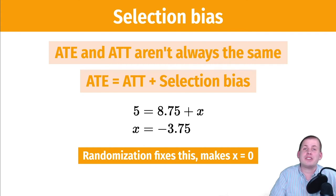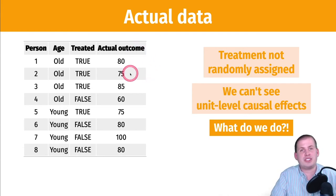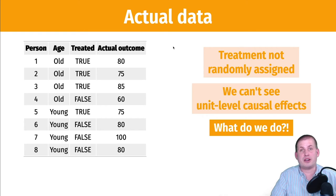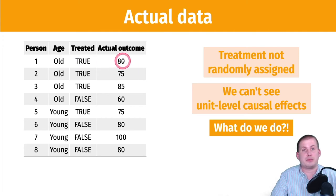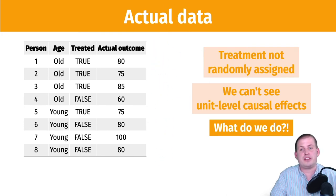In real life, this is what the dataset would look like — we don't have a column showing the outcome both with and without the program. All we see is the actual outcome: if they were treated, they get that number; if not treated, they get a different number. We don't have our individual-level causal effect column. So how do we find the average treatment effect without it?